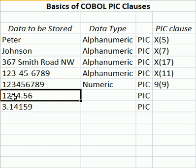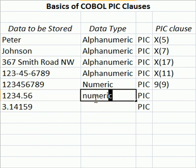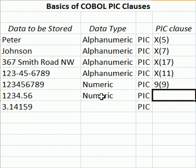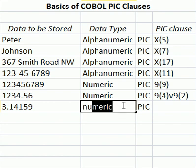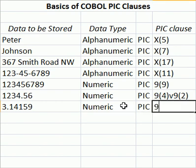This value — 1, 2, 3, 4 decimal 56 — is also numeric. If we want to keep track of decimal places, we must add what's called an implied decimal place, which is a V. So we would have PIC 9(4)V9(2). The V allows us to keep track of two numeric bytes to the right of the decimal — four before the decimal and two after. Using that same logic, a value with five decimal places would be PIC 9(1)V9(5), for five bytes to the right of the decimal.